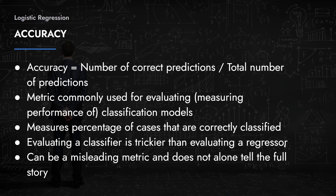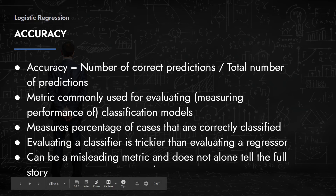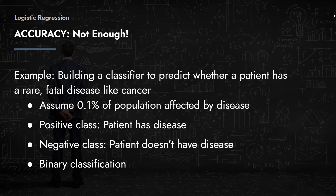It's not easy to evaluate a classifier based on just one performance measure like accuracy. With linear regression it was simpler — we had R-squared, p-values, and visual plots. Classifiers are more difficult to evaluate, so we need to define a few more performance measurements. Accuracy can be a misleading metric and does not alone tell the full story.